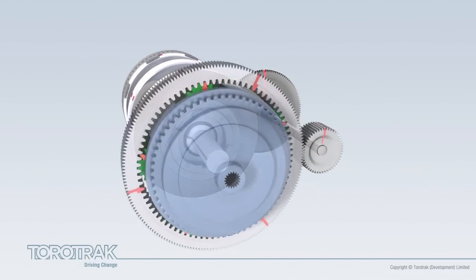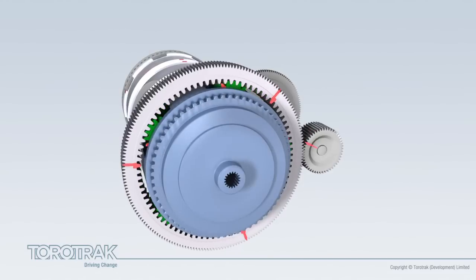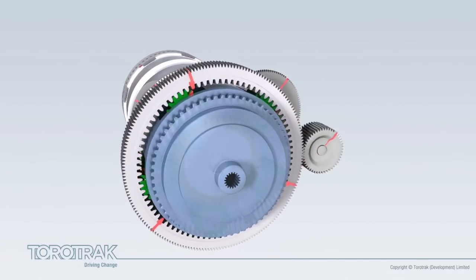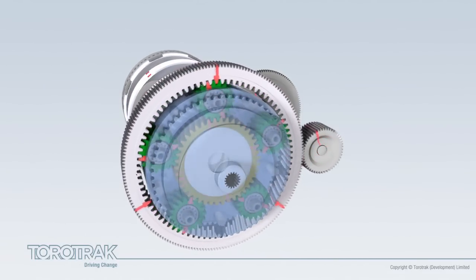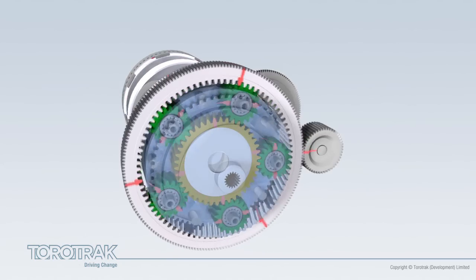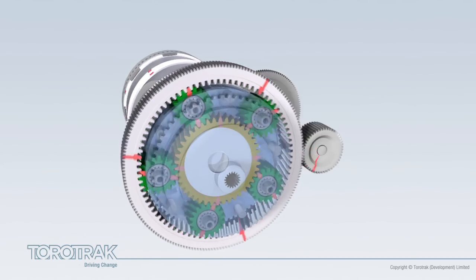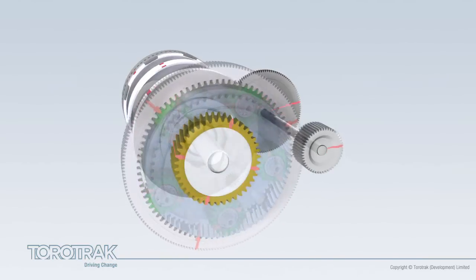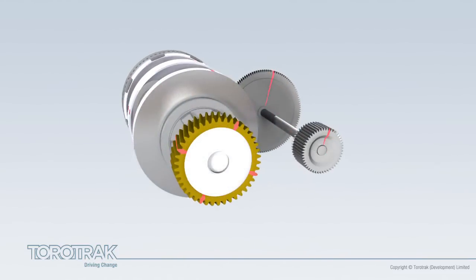A gear system is connected between the variator and the axle and road wheels. It provides the IVT functionality and is conventionally known as an epicyclic gear train.